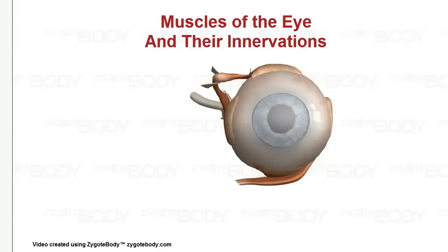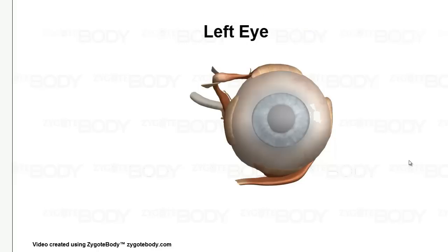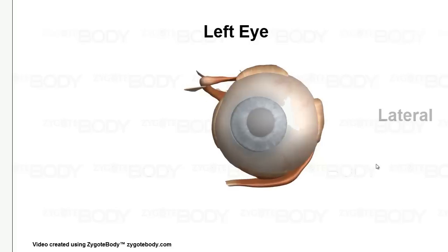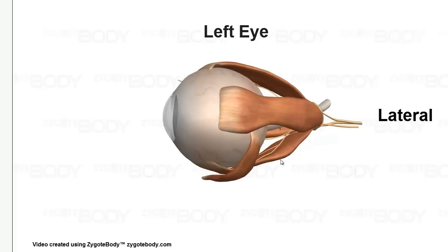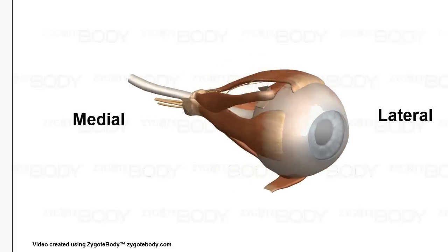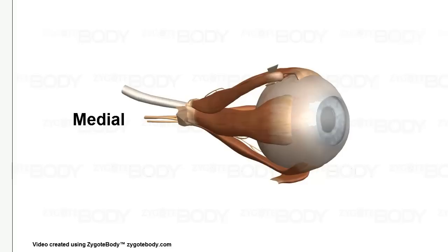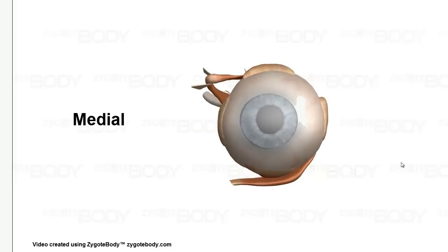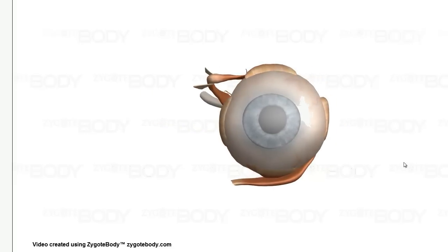In this tutorial, we are going to look at the muscles of the eye. This is a left eye, and this is the lateral view of the eye. This is the medial view of the eye. So if we look at the eye head-on, we are going to see four straight muscles or rectus muscles that surround the eyeball.